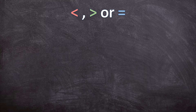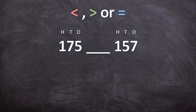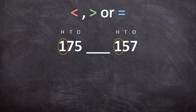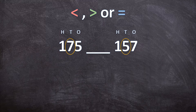If you want to compare two whole numbers, you look at the place values. You start at the biggest place value and work your way to the smallest. So we first look at the hundreds and ask which one is bigger. Both have one in the hundreds, so we move on to the tens. The seven is bigger than the five, so 175 is going to be bigger than 157.